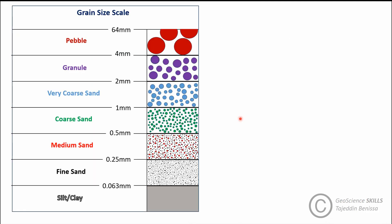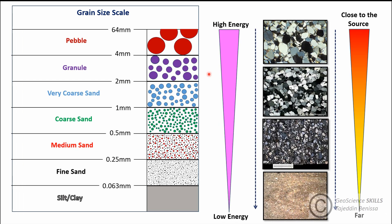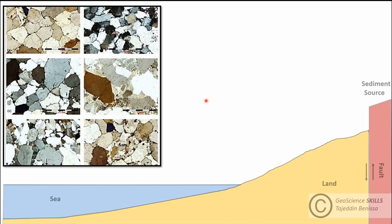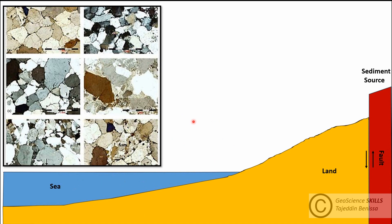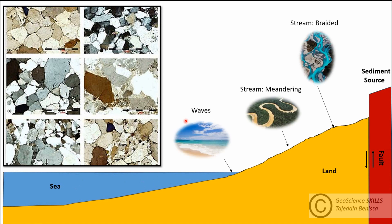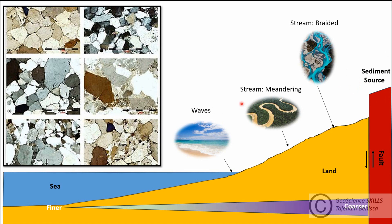In sandstone, the size of grains provides insight about the dominant energy during deposition, in addition to the distance from the sediment source. Large grains require high energy to be transported to a depositional setting, unlike fine-grained material, which is usually transported as suspended load under low-energy conditions. The most common examples of high-energy environments are streams and waves. When large grains are present, they are good indicators of both the sediment source type — whether igneous, metamorphic, carbonate, or reworked sediment — and the distance of transportation: the bigger the grain size, the closer the sediment source to the depositional setting.